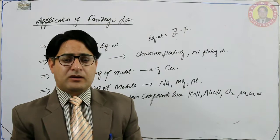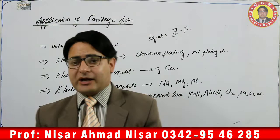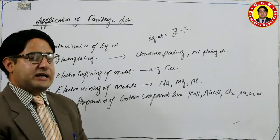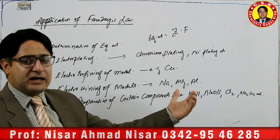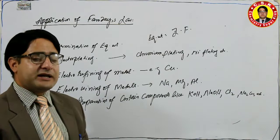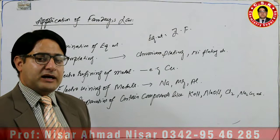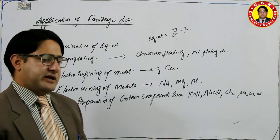The applications of Faraday's Law are as follows. First application: Faraday's Law is used to determine the equivalent weight of an electrolyte. To find the equivalent weight of a metal — how much metal will be deposited or liberated — we use the formula: equivalent weight = Z × F, or molar mass / number of electrons transferred. That is one application of Faraday's Law.